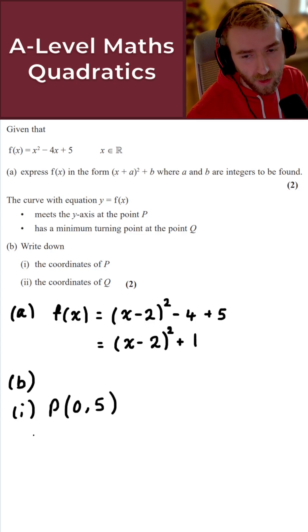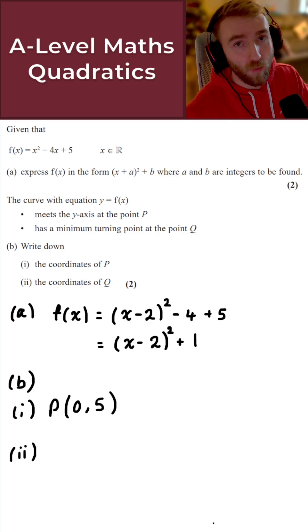And then finally, for the very last part here of b, so that's b part 2 then, we want to find the coordinates of Q. So for the coordinates of Q then, that is the minimum turning point. So what we do here is we look at our completed square form. That just simply gives us the coordinates of Q.